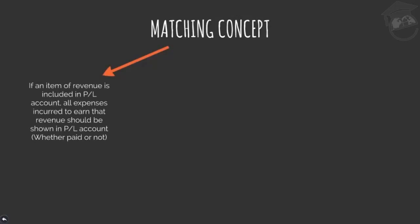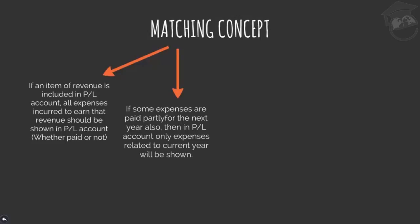Four things to keep in mind for the matching concept: First, if an item of revenue is included in the profit and loss account, all expenses incurred to earn that revenue should also be shown in the profit and loss account, whether they have been paid or not. Second, if some expenses are paid partly for the next year, only expenses related to the current year will be shown in the profit and loss account — advance payments whose benefits will be earned in the future must be recorded in the future.